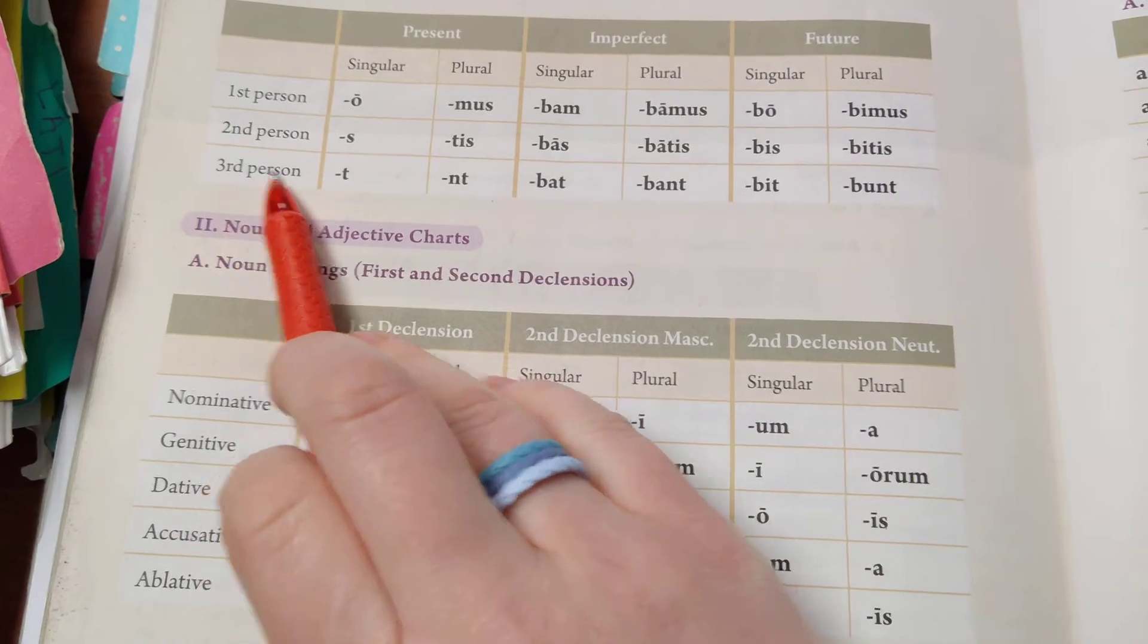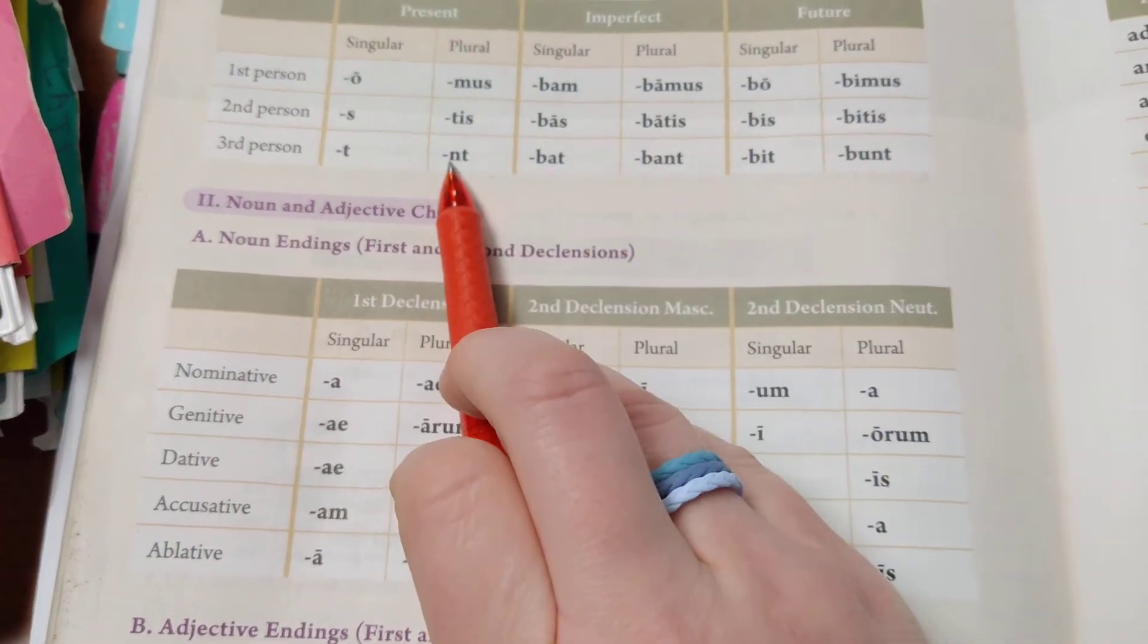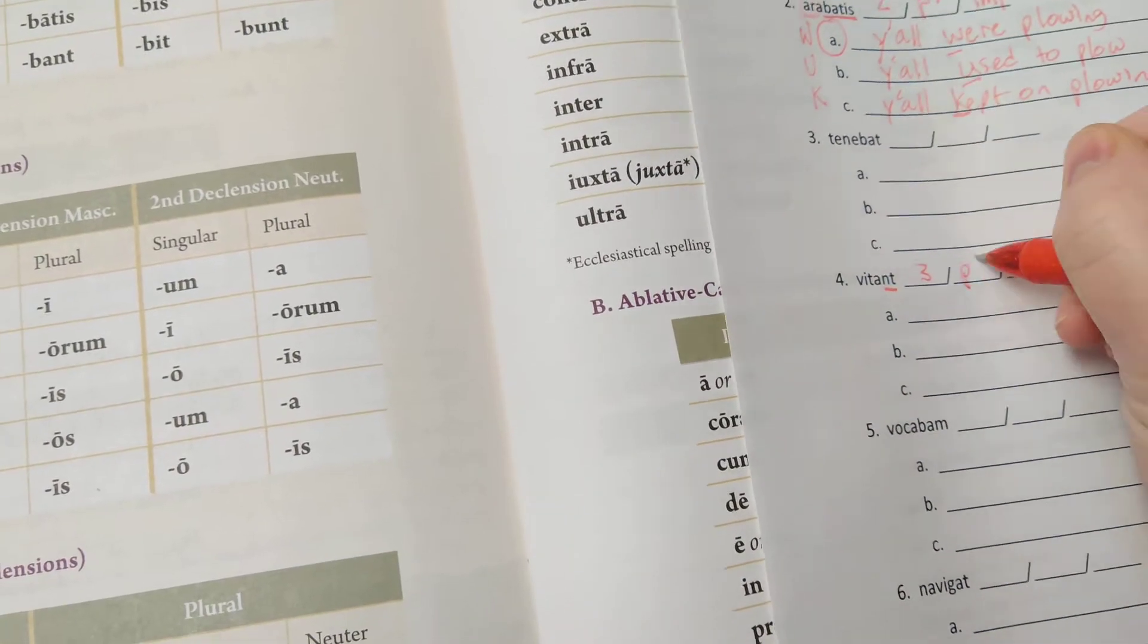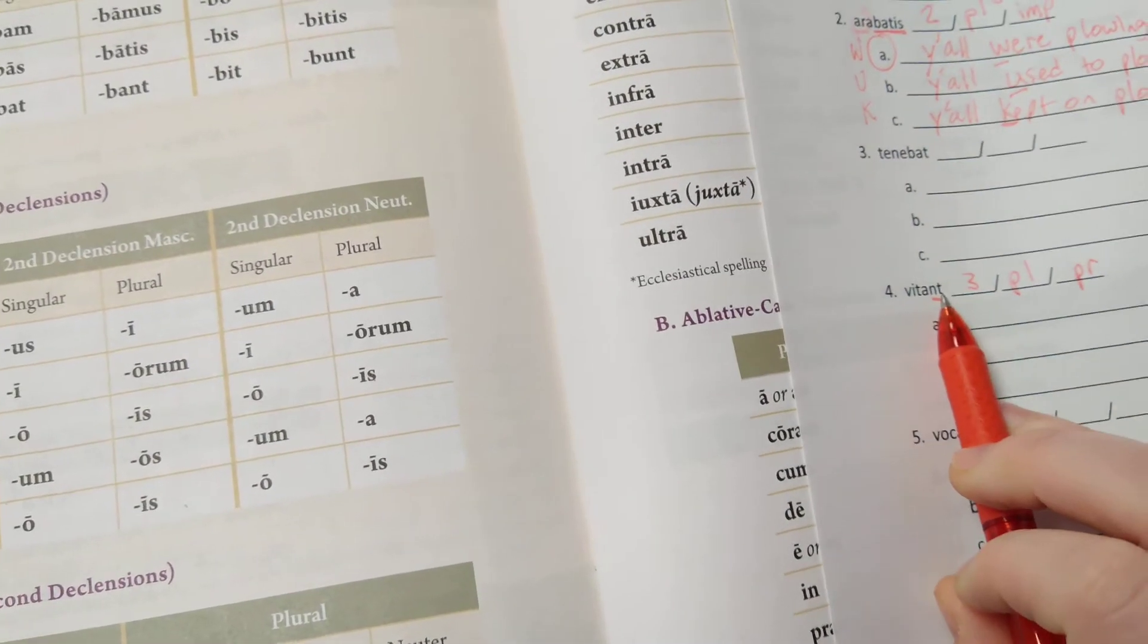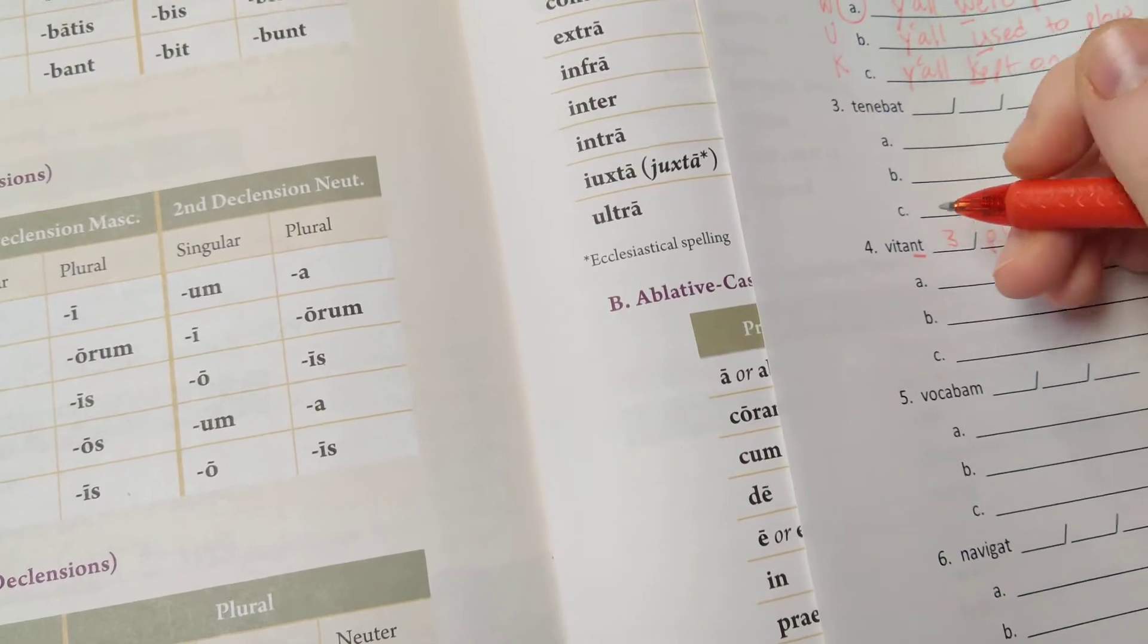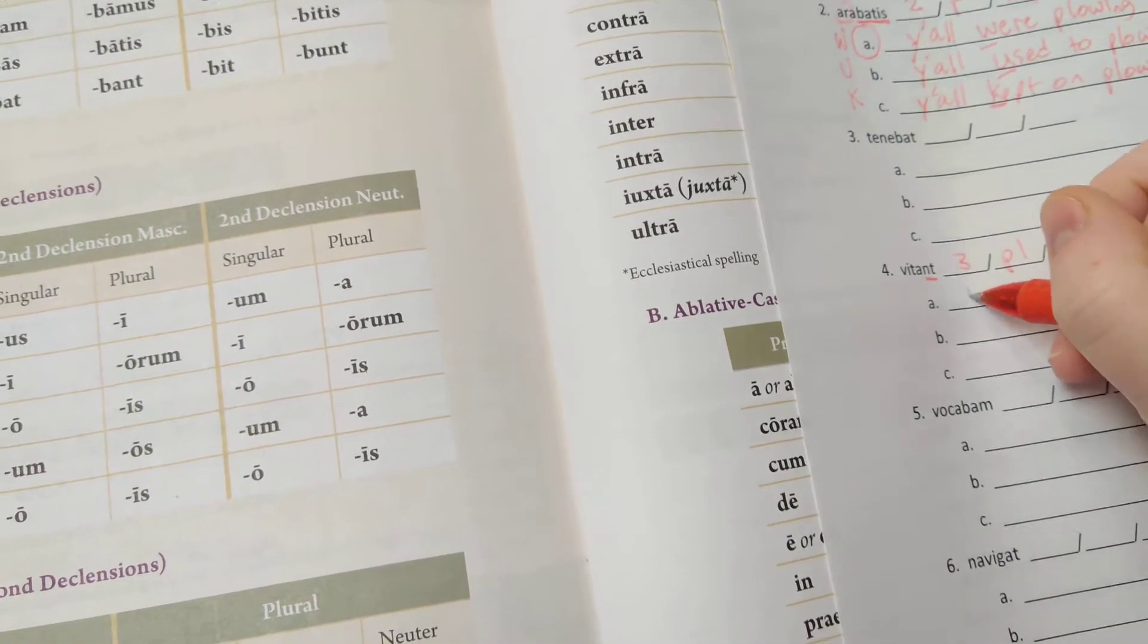Which tells us that it is third person, plural, present tense. So third, plural, present tense. -unt means they. So we know our subject is they.